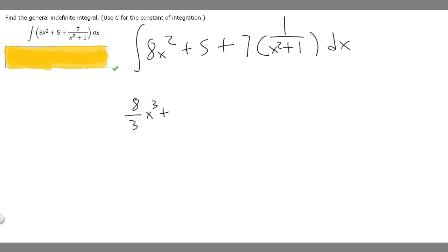Then let's do the antiderivative of 5. Whenever you take the antiderivative of a constant, you just add your variable next to it. So it becomes 5x, plus 5x.